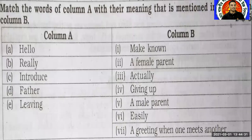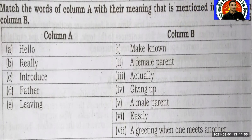The first activity is matching. Match the words of Column A with their meaning mentioned in Column B. In Column A there are five words, but in Column B there are more words than Column A. You have to match the words from Column A to Column B by their meaning. In Column A the words are: hello, really, introduce, father, leaving. In Column B the words are: make known, a female parent, actually, giving up, a male parent, usually, a greeting when one meets another.